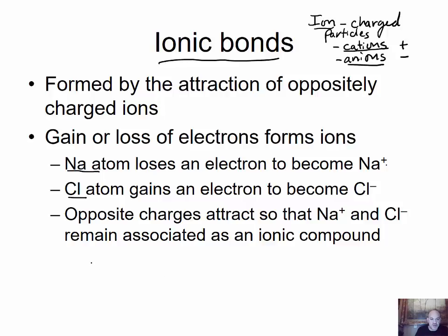I like to draw what are called dot structures, where we draw the sodium atom with its valence electron. It does have inner shell electrons, but the outermost shell only has one. Every element in the same column as sodium can be drawn this way. Chlorine, if we look at the periodic table, has seven valence electrons, so we draw all seven and pair up the ones we can — six paired and one lone.